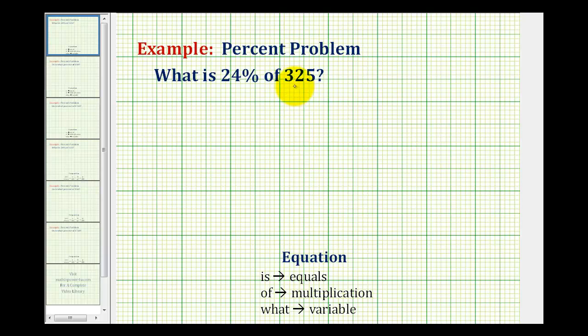When using the percent equation, the word is represents an equal sign, of represents multiplication, and what or what number represents the unknown, which we'll represent using a variable.